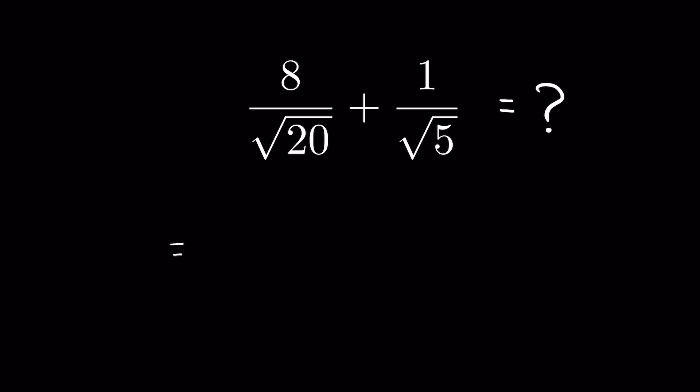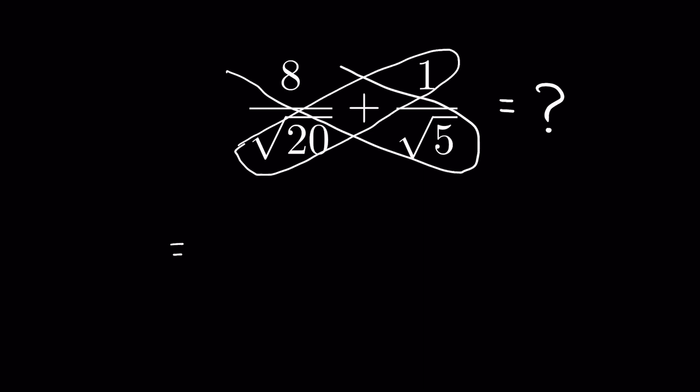We are going to use the butterfly method of adding fractions, where we cross multiply the fractions. So 8 is multiplied by square root of 5, and square root of 20 is multiplied by 1.